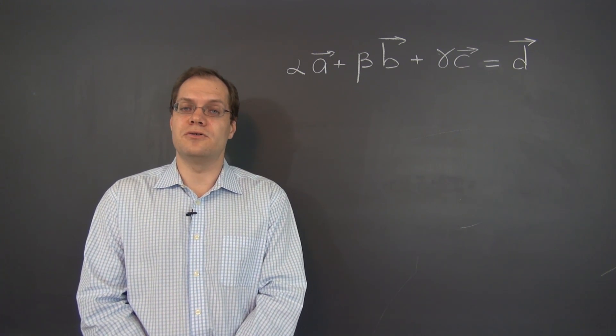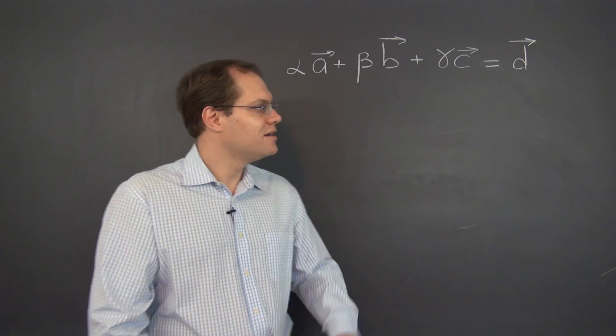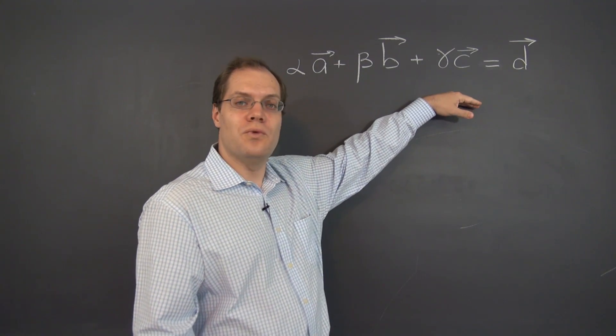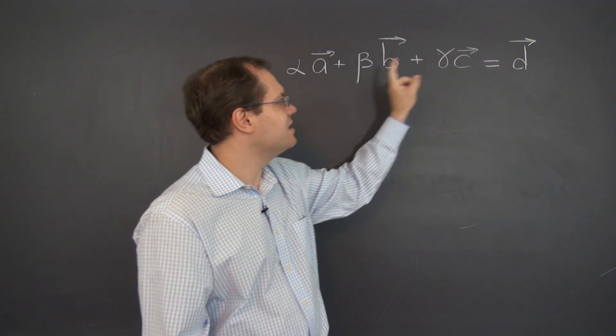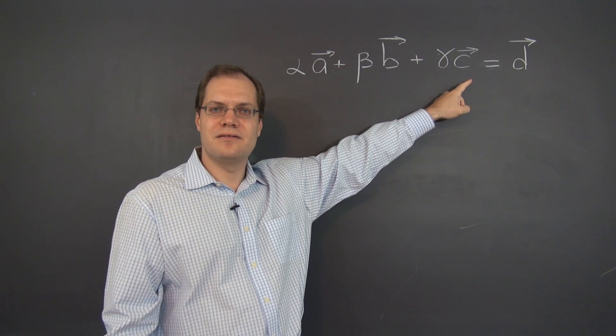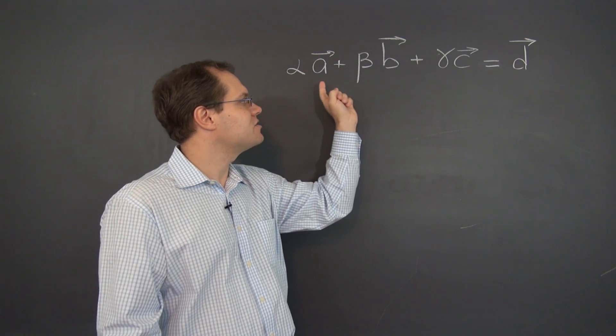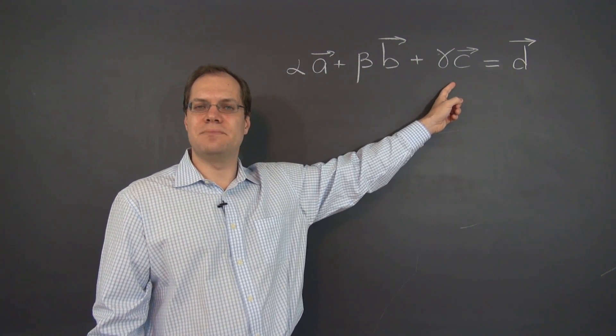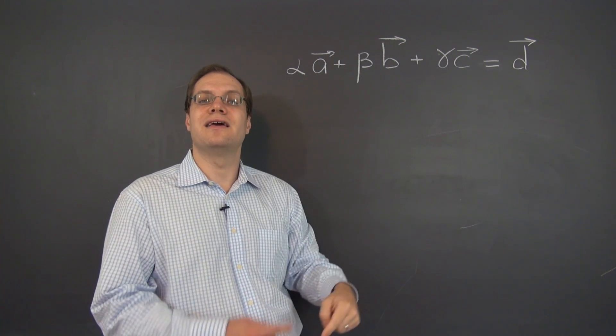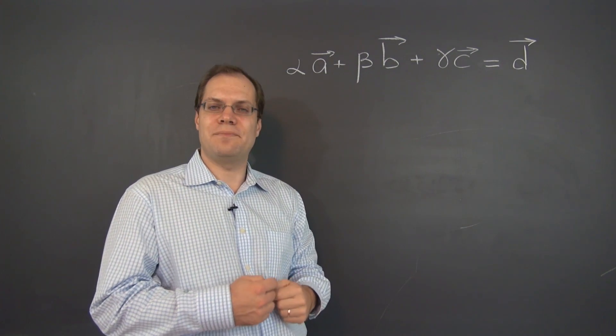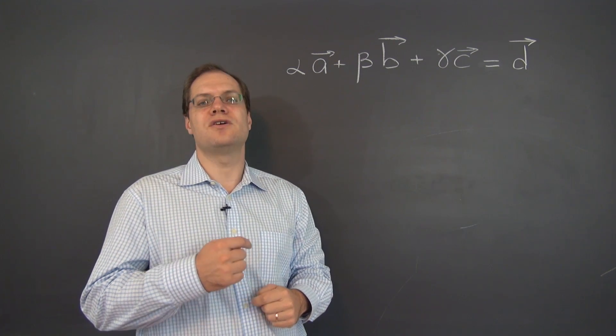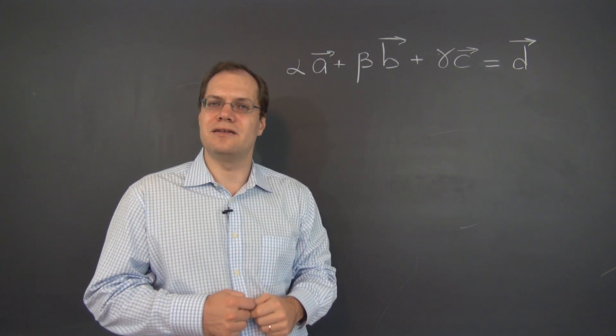So here's how the argument goes. We will show that if there is more than one decomposition of the vector d in terms of a, b, and c, that would mean that vectors a, b, and c are linearly dependent. So if they're independent, there cannot be more than one decomposition of the vector d, so independence would meet uniqueness.